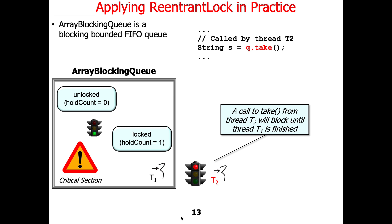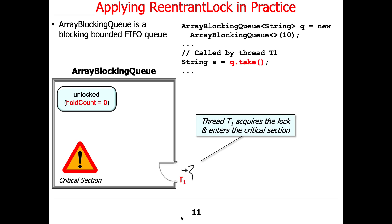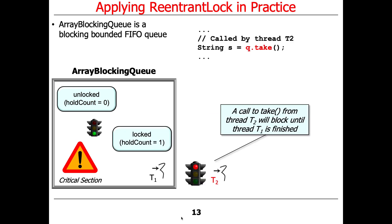Thread T1 has called take. Now thread T2 comes along with the same queue — the same bounded queue. Thread T2 calls take, but it has to block because it can't get into the critical section since thread T1 already owns it. When T2 calls lockInterruptibly, it will block.